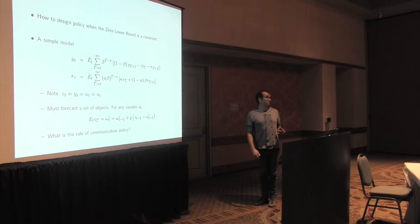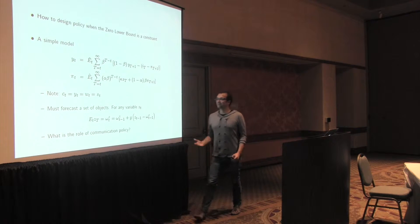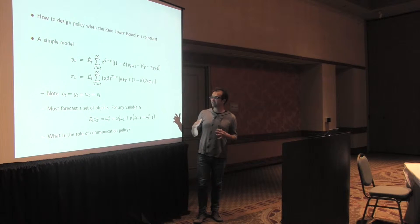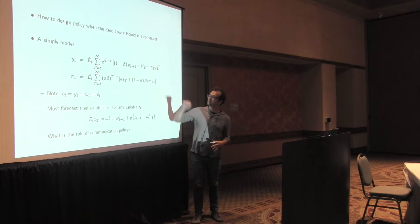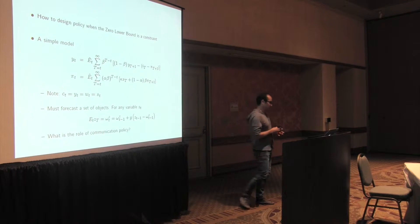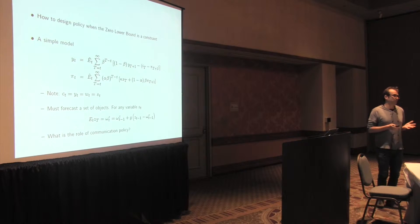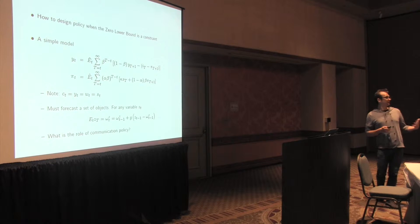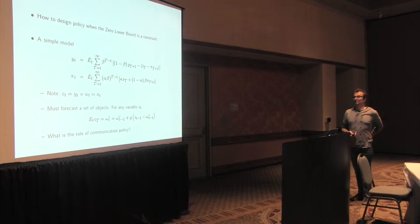So the difficult thing in these models is people have a complicated forecasting problem. They have to project all these things into the infinite future, and the question is how they do that. And so this paper is kind of centrally concerned with the complexity of this forecasting model and asking whether communication policy can make this forecasting problem somewhat simpler.